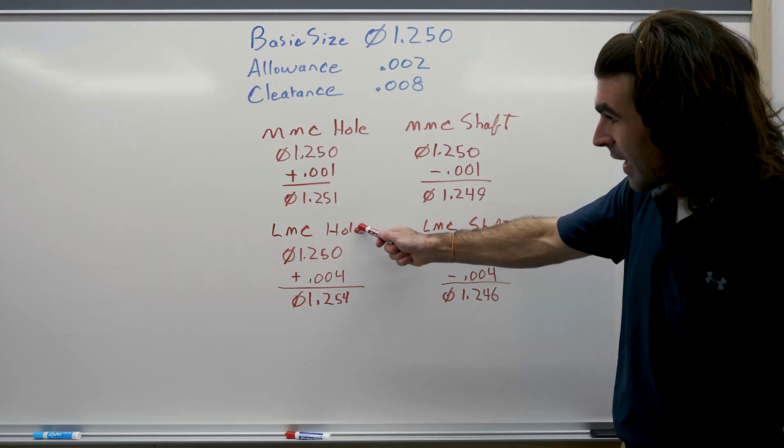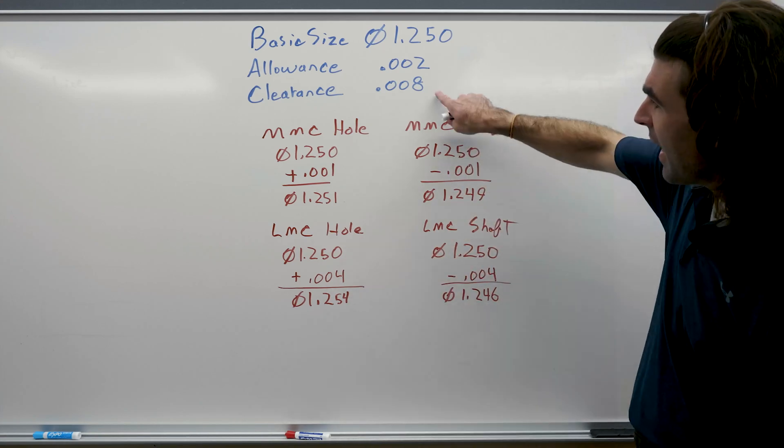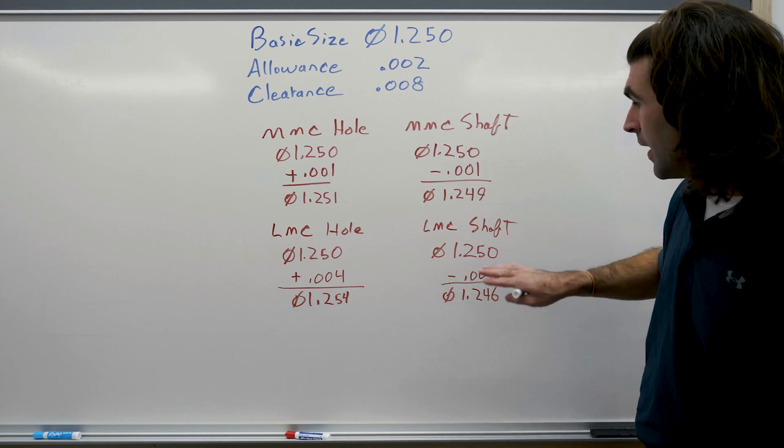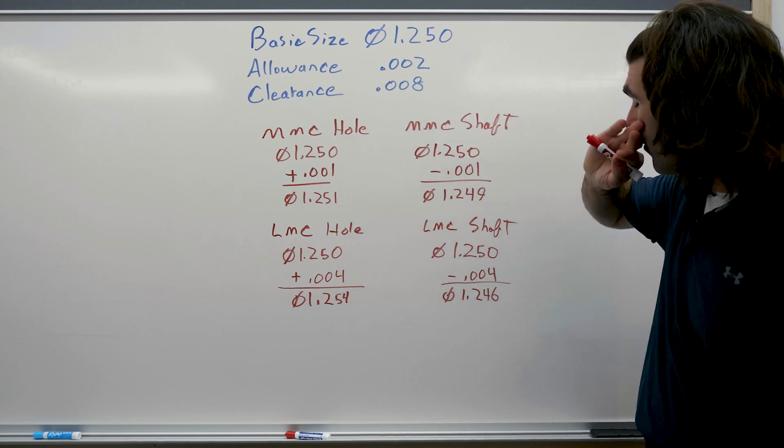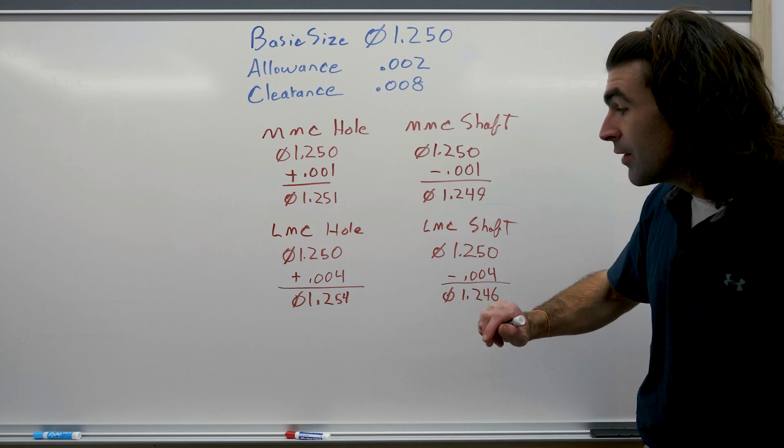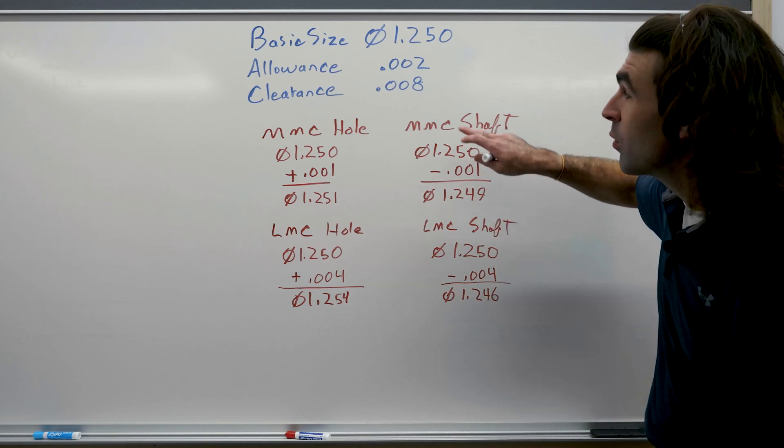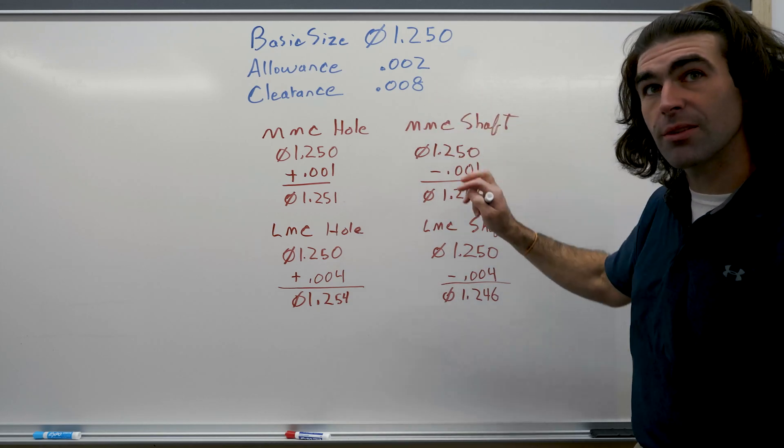Same way we got LMC hole is the basic size plus half of the clearance gives us 1.254. LMC of the shaft is going to be the basic size minus half of the clearance, which is 1.246. So if we subtract LMC hole minus LMC shaft, we'll get that clearance value, 8 thousandths.